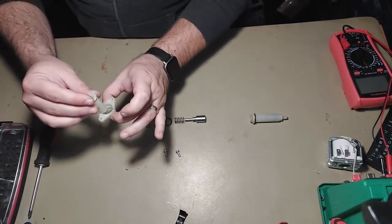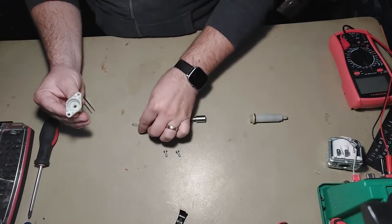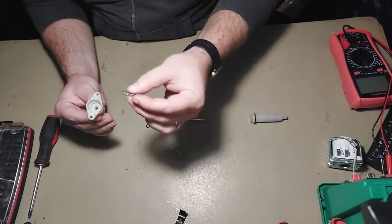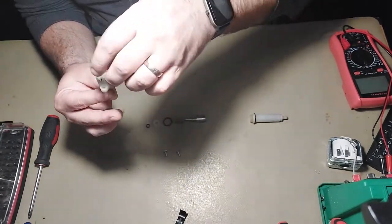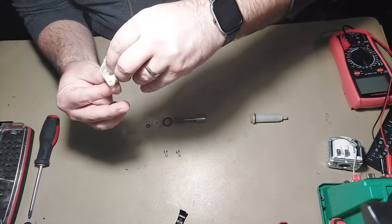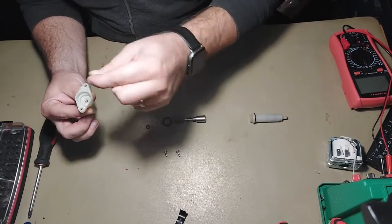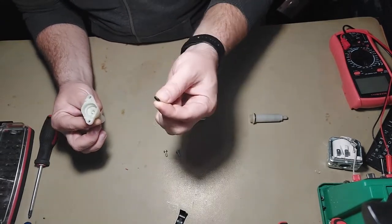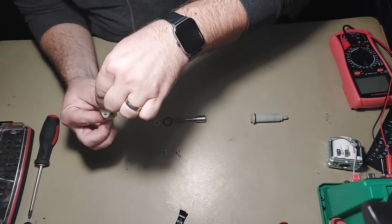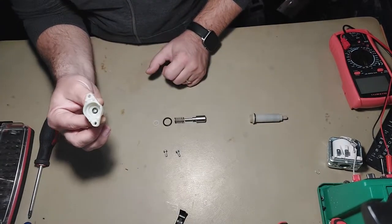Then take this, insert it back here. Here take the small spring with the narrower side inside. Then take the small ball, don't lose it, put it in the middle. Take the small o-ring, put it in the middle like that.